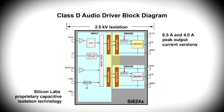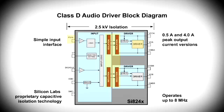These drivers are available in 0.5 amp and 4 amp peak output current ratings. The 0.5 amp version is perfect for Class D applications at power levels up to 400 watts, while the 4 amp version services applications at power levels up to 1 kW. The PWM input version connects directly to the external PWM modulator, simplifying the control interface. Lastly, these audio drivers are capable of operating up to 8 megahertz, more than ample headroom for higher frequency applications.